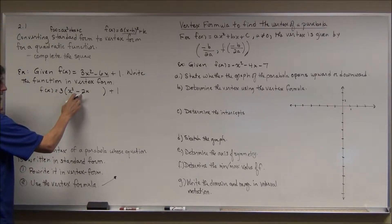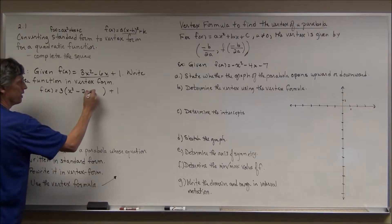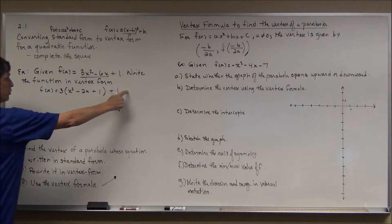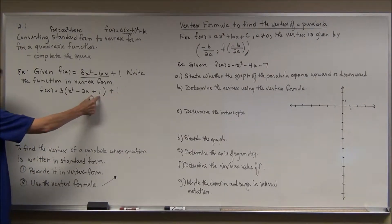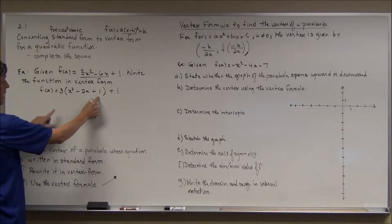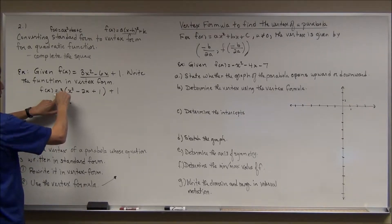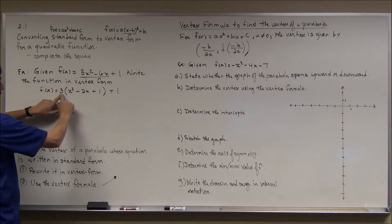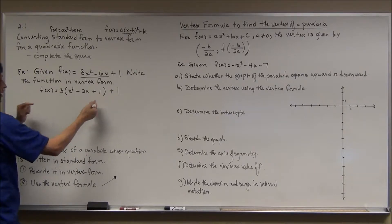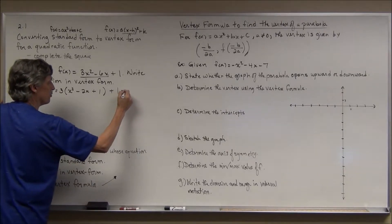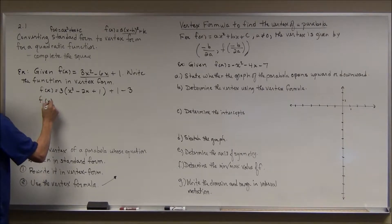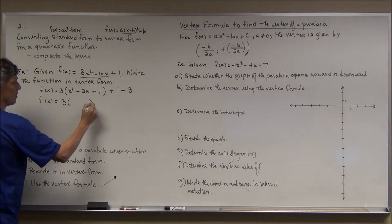We take half of the middle coefficient and square it: half of -2 is -1, and (-1)² = +1, so I add 1 inside the parentheses. Now before you subtract 1 on the outside to balance — I didn't really add 1, I added 3, because that 3 out front is distributed over everything in the parentheses. So the 3 times +1 means I actually added 3. To balance that, I subtract 3 outside, since adding 3 and subtracting 3 doesn't change the value.